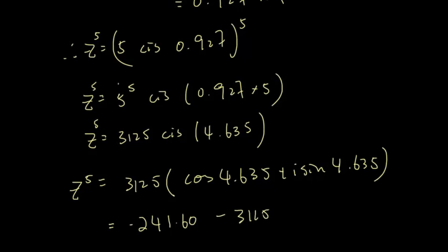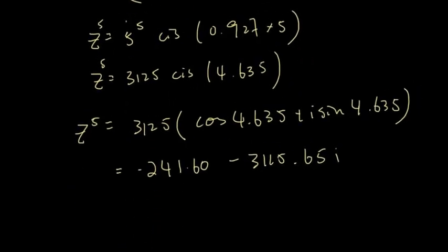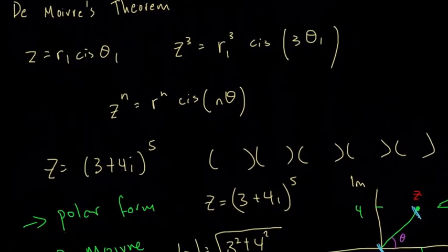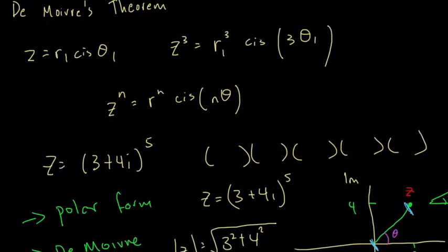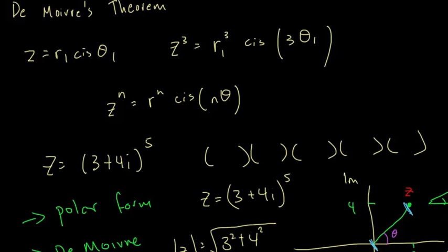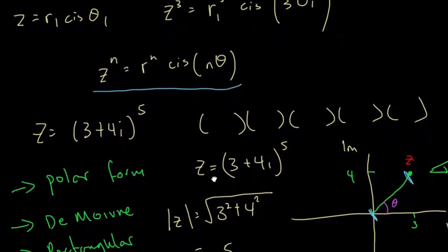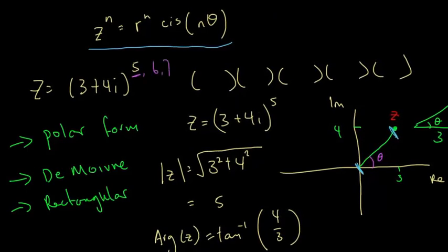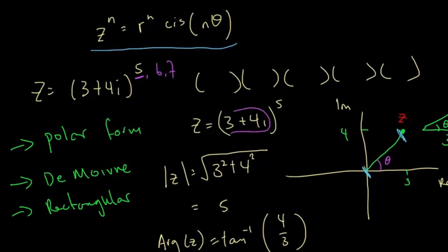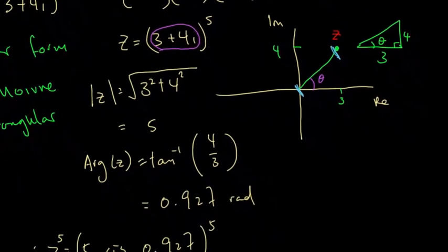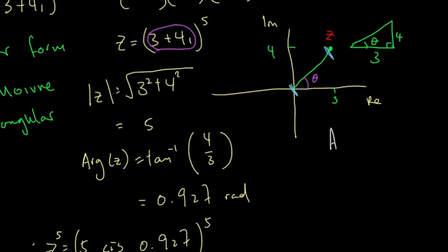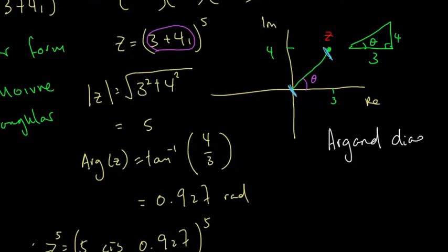Just to recap: De Moivre's theorem is used when a complex number in polar form is raised to a power. The general formula is Zⁿ = rⁿ cis nθ. It is useful when you have a rectangular form complex number raised to a high power, such as 5, 6, or 7. The first step is to convert the rectangular form — like 3 + 4i — into polar form. Whenever finding the polar form, always draw it on the Argand diagram first — it's very important.